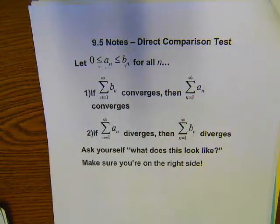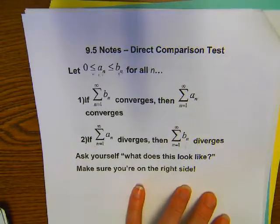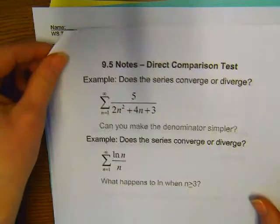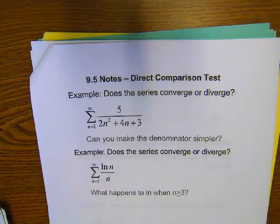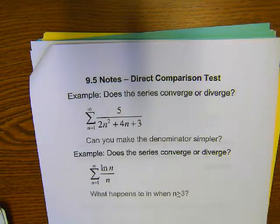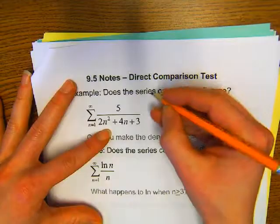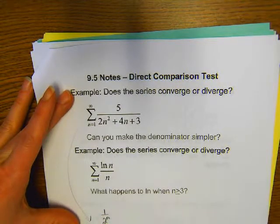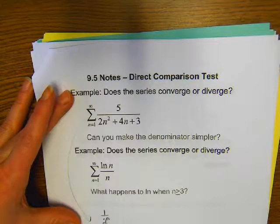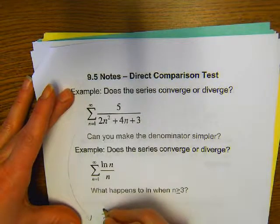You kind of have to have in your mind what you think your answer is first — you can look at terms and graph them as well. Let's take a look at a couple of examples. I'm going to compare this series to 5 over 2n squared.